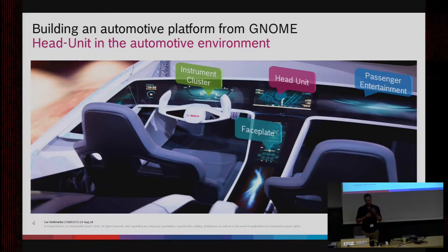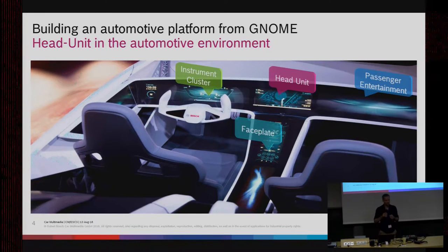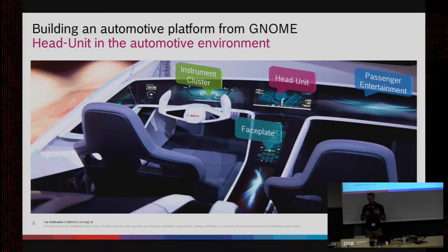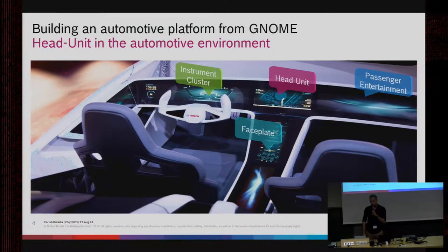Then there's the face plate. In this futuristic example, the face plate is done entirely by software. Usually you see buttons or a touch display to interact with the head unit for navigation and so on. Some of you may have seen the Tesla Model S — it has a huge 17-inch display and more or less no buttons anymore. Everything is handled via a touch-sensitive display, even controlling the AC.